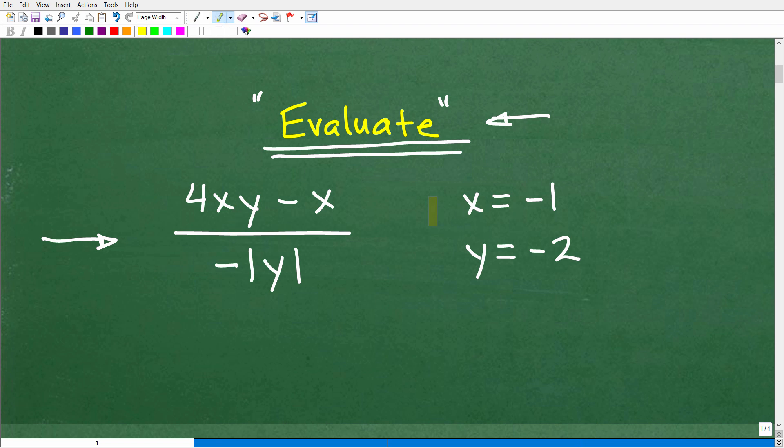So let's take a look at what we need to do here. We have 4xy minus x over negative of an absolute value of y. So for this x here, I need to replace that with negative 1. This y here, I need to replace that with negative 2. So this x will be replaced with negative 1. And then this y here will be replaced with negative 2. And then we want to simplify.